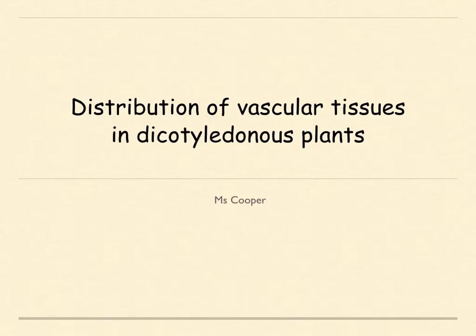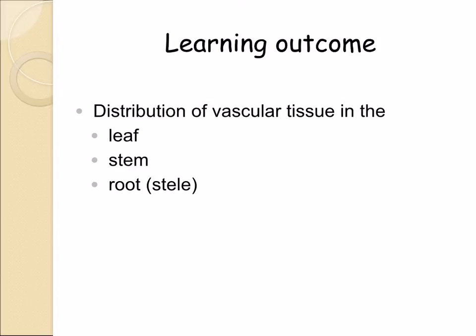In this topic we're going to discuss the distribution of vascular tissues in dicotyledonous plants. We're going to discuss the distribution of the vascular tissue in the leaf, stem and root. You will need to be able to draw plan diagrams of a cross-section of each of these parts and to be able to annotate the different tissues around the vascular bundles. We're also going to discuss the stele in the root.